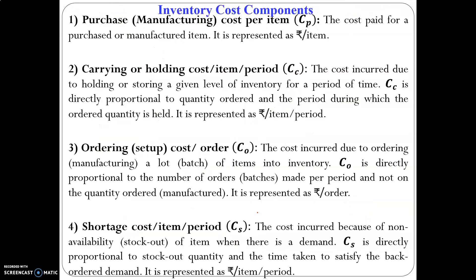So that is the third classification. We have seen three different classifications of inventory: one based on demand — dependent demand inventory and independent demand inventory; the second based on the position of the inventory; and the third based on the function of the inventory. Now let's move on to the next topic, which is inventory cost components.